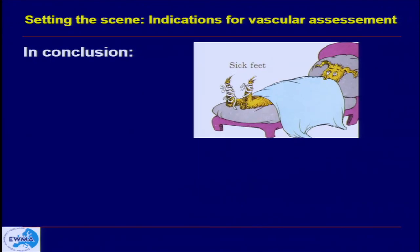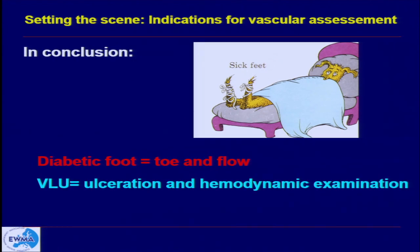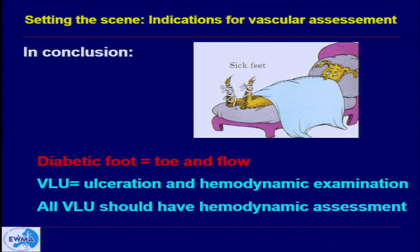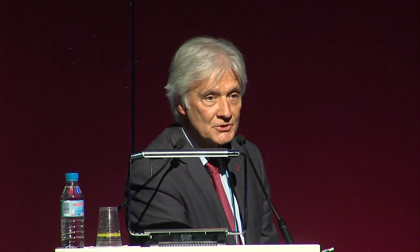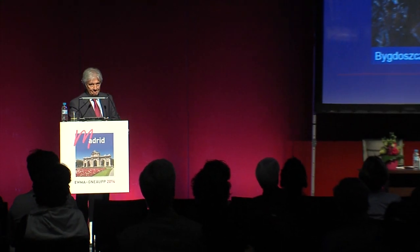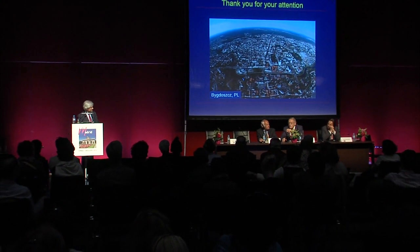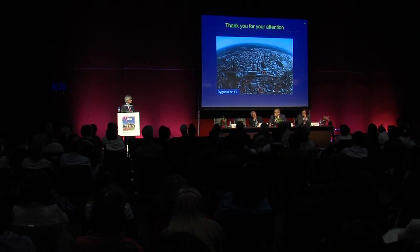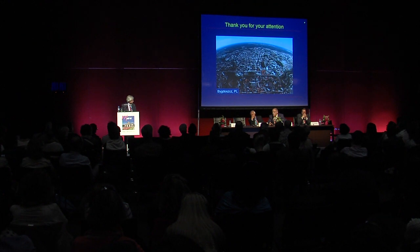In conclusion, if you have a sick foot: if this is a diabetic foot, then it is toe and flow. If this is the venous leg ulcer, it should be ulceration and hemodynamic examination. I think that after this session we should examine all patients with venous leg ulcers with hemodynamic assessment. This is a very crucial model to then pursue local treatment and get good results in the treatment of venous leg ulcer. Thank you very much.